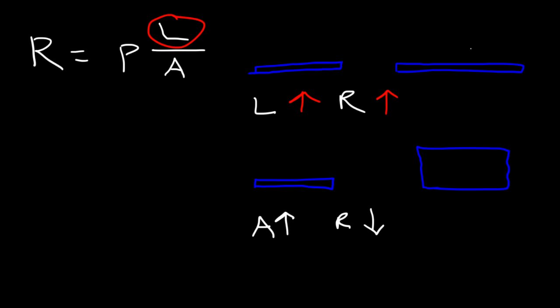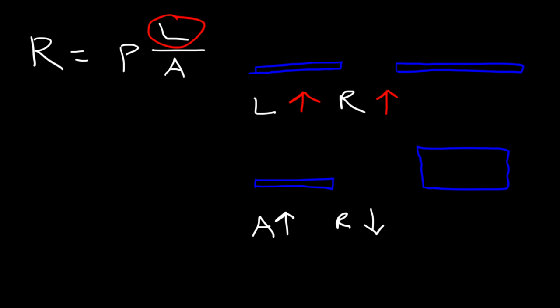In the case of length, the longer the road, the more time it takes to get through it — so increasing the length increases the resistance. Now, what about rho, the resistivity? That is a property of the metal itself, or the material that conducts electricity.